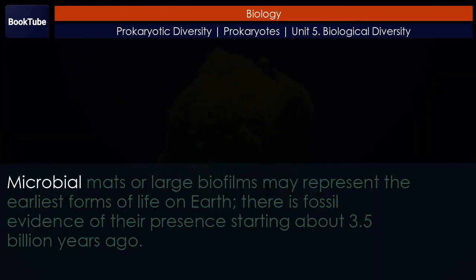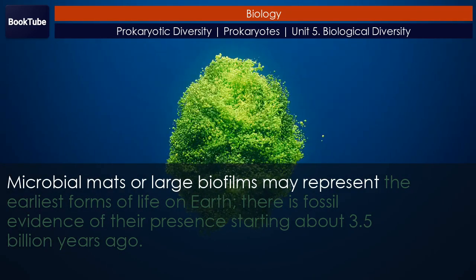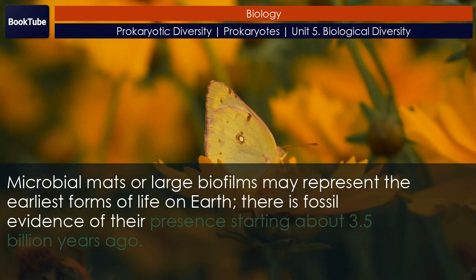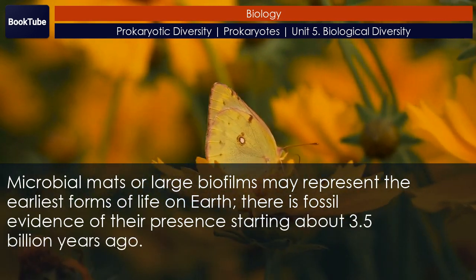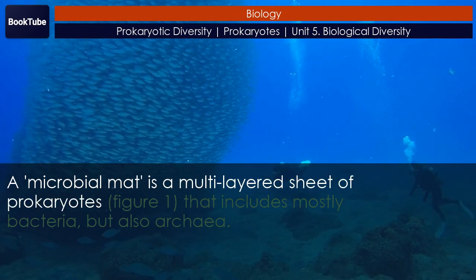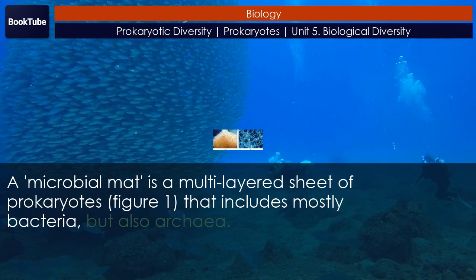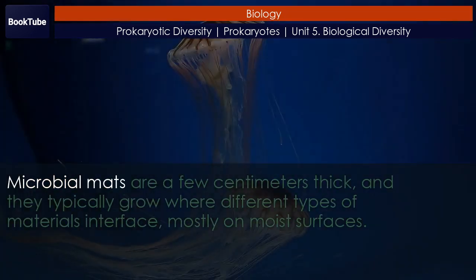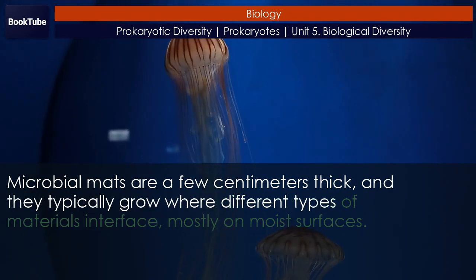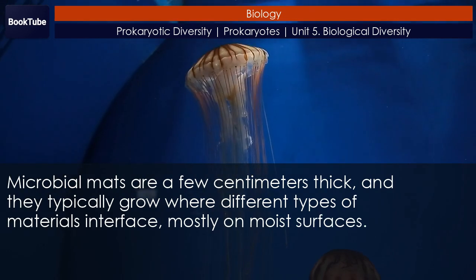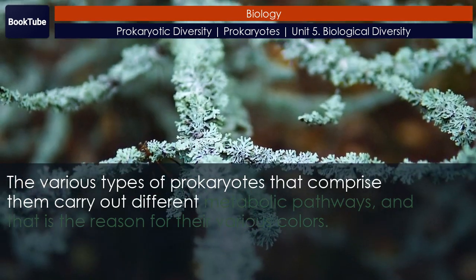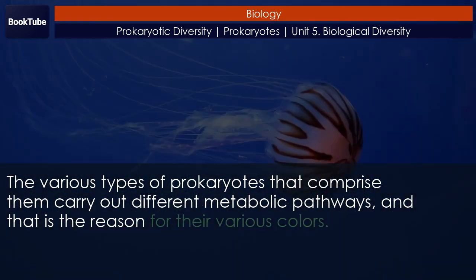Microbial mats — large biofilms — may represent the earliest forms of life on Earth. There is fossil evidence of their presence starting about 3.5 billion years ago. A microbial mat is a multi-layered sheet of prokaryotes (Figure 1) that includes mostly bacteria, but also archaea. Microbial mats are a few centimeters thick, and they typically grow where different types of materials interface, mostly on moist surfaces. The various types of prokaryotes that comprise them carry out different metabolic pathways, and that is the reason for their various colors.